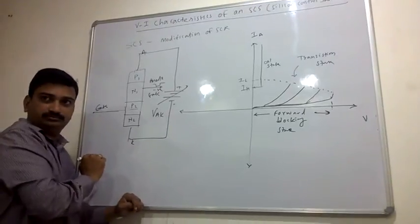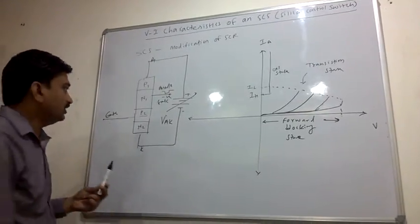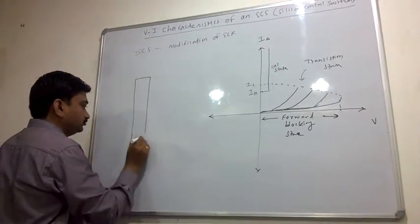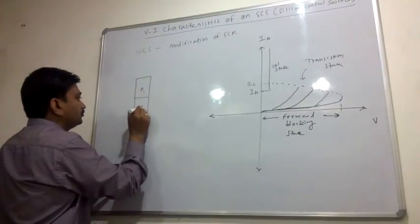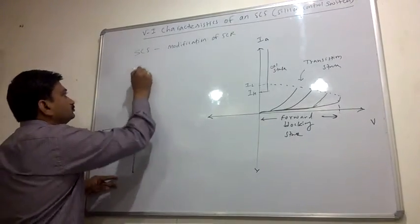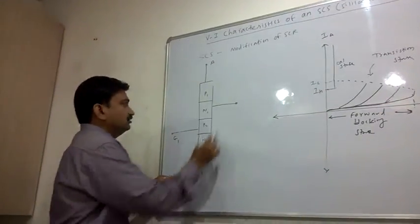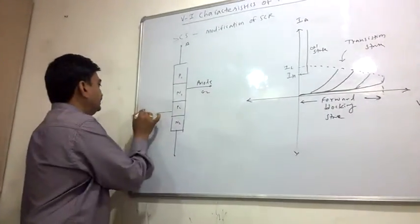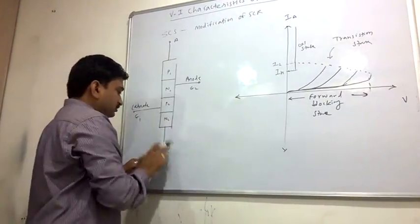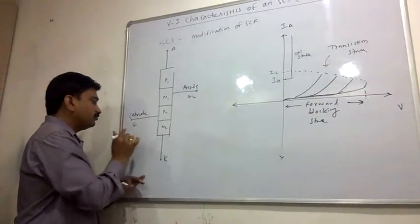The purpose of the anode gate is that it is used to turn off the SCS. Gate 2 is the anode gate, and the other is the cathode gate. If you want to turn on the SCS, you can provide a positive pulse to the cathode gate.